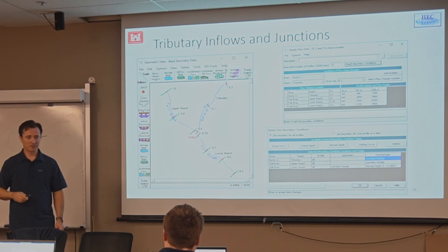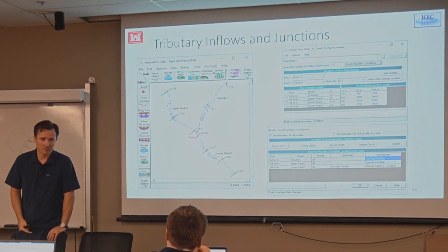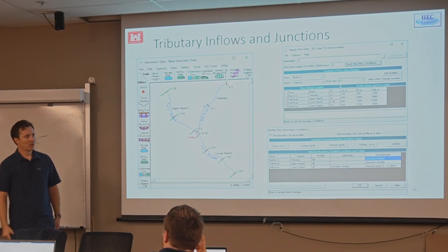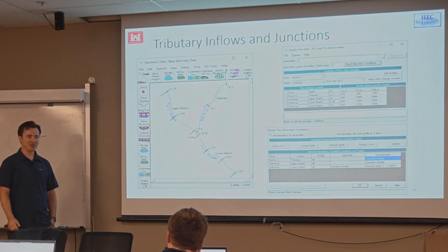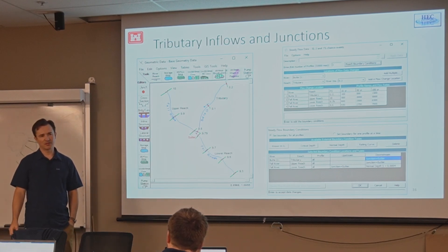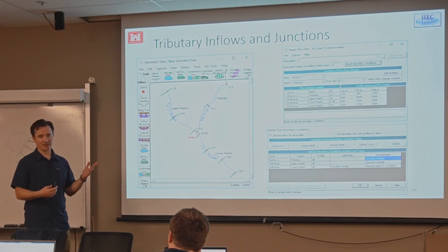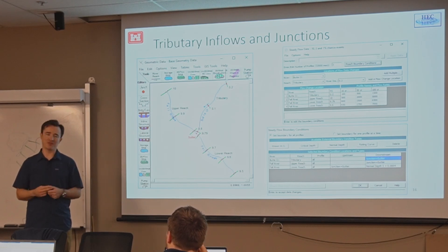What would be the application to use normal depth versus critical depth versus like a rating curve? Why would you use one or the other? It depends on the data that you have. Stages are going to be better, but they're more difficult to get that data. Whereas normal depth, all you need is a friction slope and a roughness. And as a friction slope, you could kind of approximate that by the slope of your river. So there's more uncertainty with the normal depth, but it's easier to estimate if you don't have data.